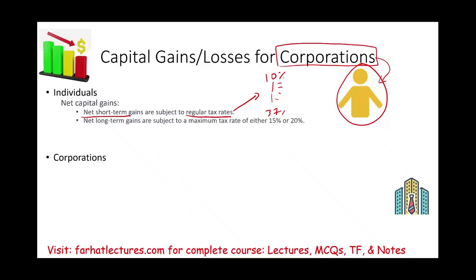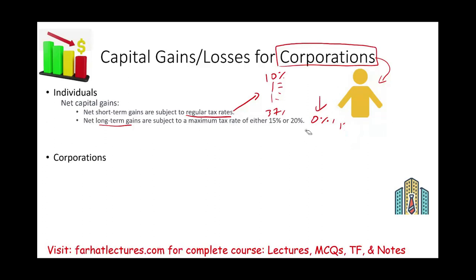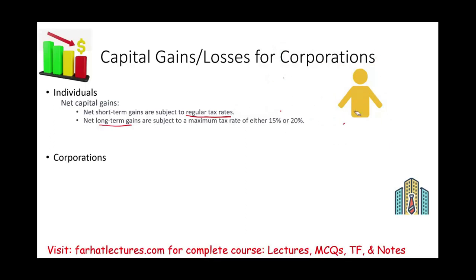If you have long-term capital gains — meaning you held those assets for more than a year — they are subject to preferential tax treatment: either 0%, 15%, or 20%. When are they taxed at 0%, when at 15%, when at 20%? You have to go back and review the capital gains and capital losses rules for individuals.